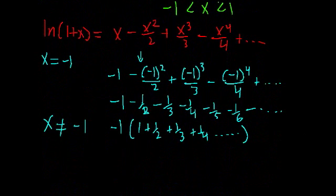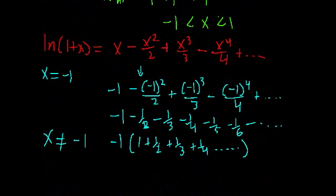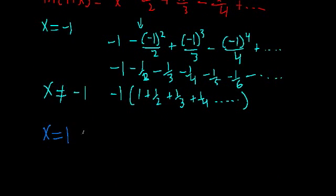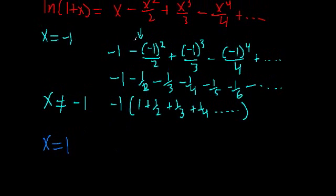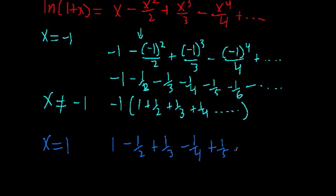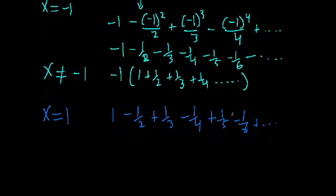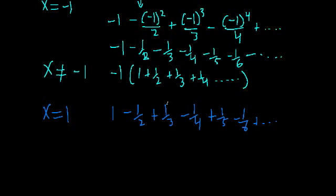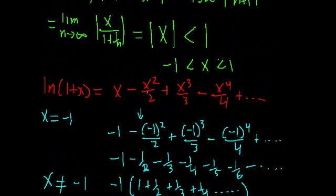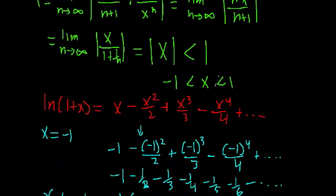Now let's see if the series converges or diverges at the other endpoint, x equal to 1. Setting x equal to 1, our series becomes 1 minus 1 over 2, plus 1 third, minus 1 fourth, and the sign alternates — plus 1 fifth, minus 1 sixth, and so on. You should recognize this as the alternating harmonic series — basically the harmonic series but with the sign switching every term. Unlike before, the alternating harmonic series will converge, which means our series does converge to our function at x equal to 1.